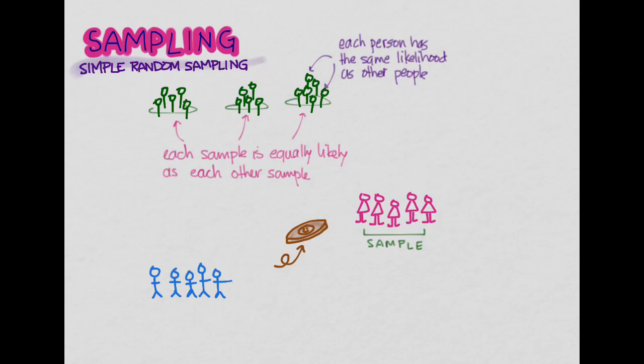Now ask yourself, what was the probability of this woman being selected? Fifty percent. It was a coin flip. What about this woman? Fifty percent. What about this guy? Fifty percent. What about this guy? Fifty percent. So it was equally likely for any one of these people to have been chosen into the sample. So that meets this criteria here.